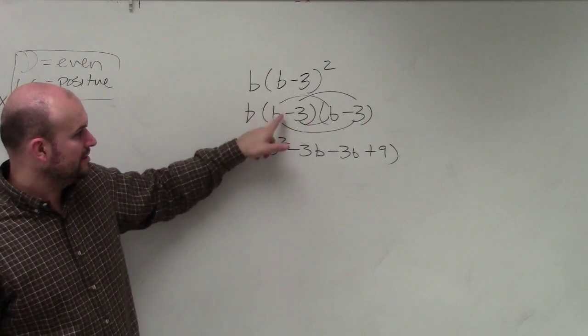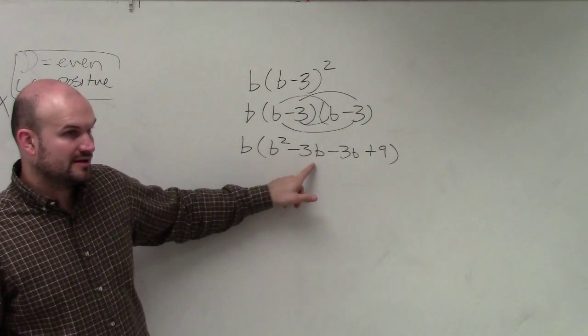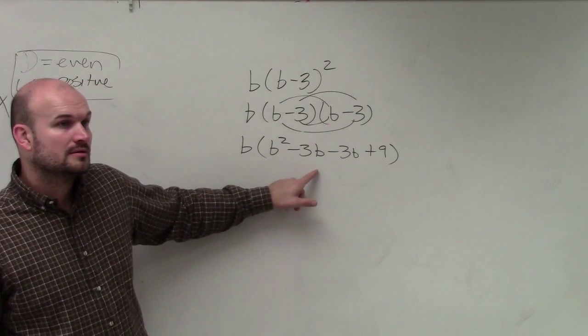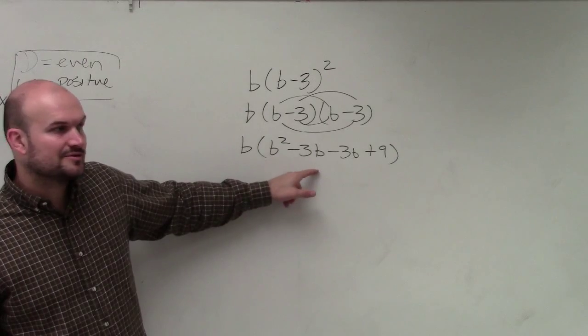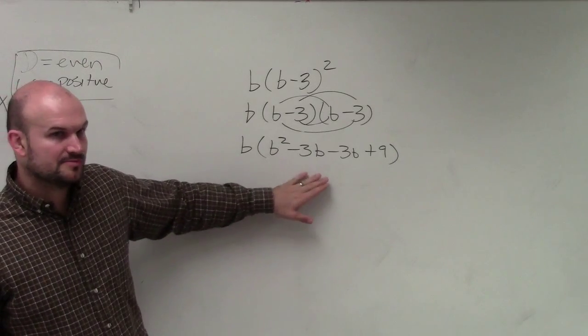b times b is b squared. b times negative 3 is negative 3b. Why do you have to foil it? You have to foil. It's the most common mistake students will make. So that's why I'm happy to go over this problem for you.